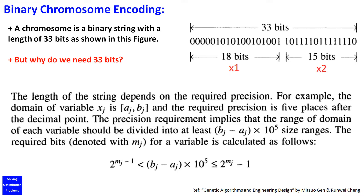The length of the binary string depends on our required precision, or accuracy. For example, the relationship between the precision and the number of bits is represented by this formula. Please pause the video to slowly study this example.